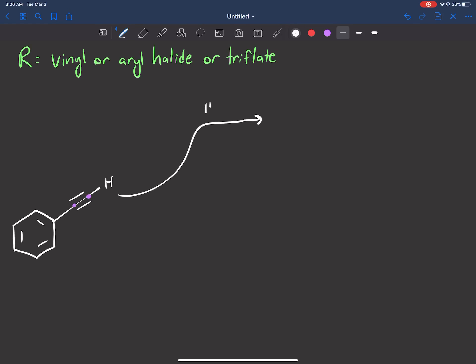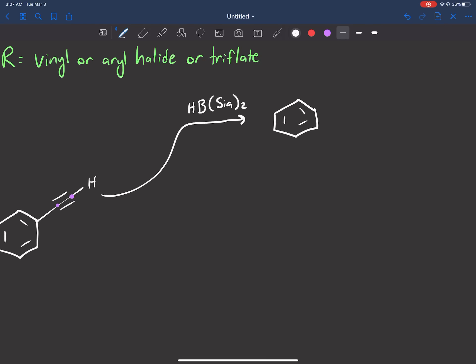The first reagent I can use is this disiamylborane. The name isn't too important. But what it's going to do is it just changes that triple bond to a double bond.